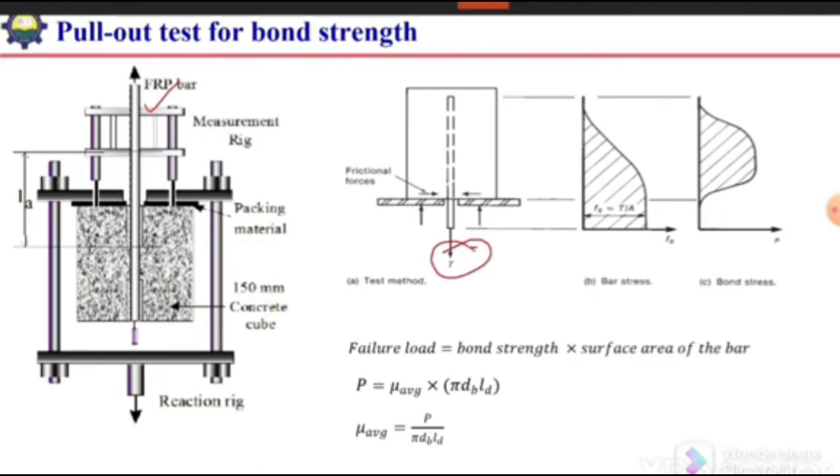If we see the stress inside this steel bar along the embedment length, at the face of this block the stress will be maximum, equal to fs, and after some time this value will decrease, and at the end of this bar it will become zero.